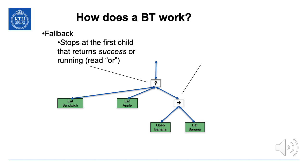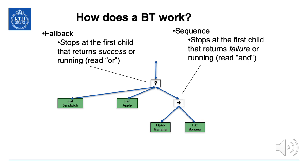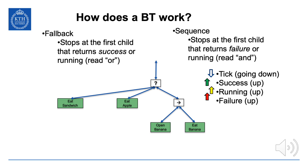In this case you first try eating the sandwich; if that fails, you try eating the apple; if that also fails, you go on to the banana. You can read the fallback as: you eat the sandwich, or you eat the apple, or the banana. Conversely, the sequence is intended for actions that succeed and then you go on to the next. The sequence stops at the first child that returns failure or running. You can read the sequence as: you open the banana and you eat the banana. If you fail at opening the banana, the sequence will not go on to try to eat it.